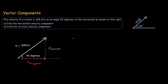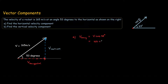To answer part A, the horizontal vector — we know that V horizontal equals V cos 53 degrees from basic trig, because cos 53 degrees equals adjacent divided by hypotenuse. So V horizontal equals V cos 53, which is 165 cos 53 degrees. That gives us 99.3 meters per second.